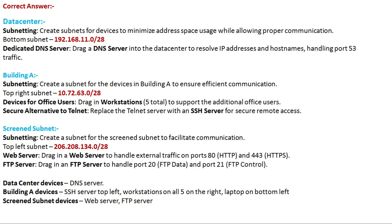To summarize the drag-and-drop placements: in the Data Center, place the DNS server. In Building A, place the SSH server top-left, workstations in the appropriate slots, and a laptop bottom-left. In the Screen Subnet, drag and drop the web server and the FTP server. Let's check the answer in diagram format.